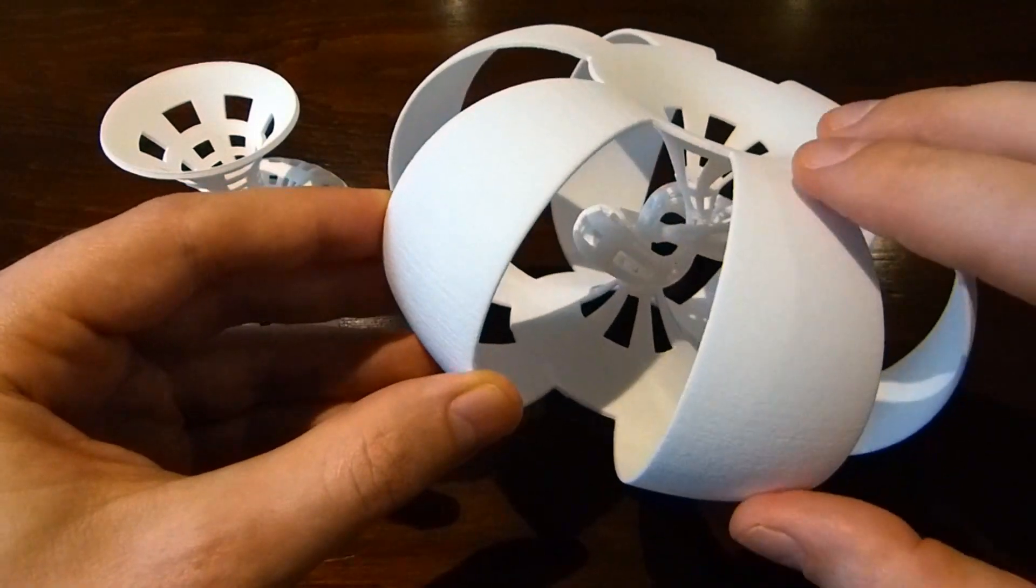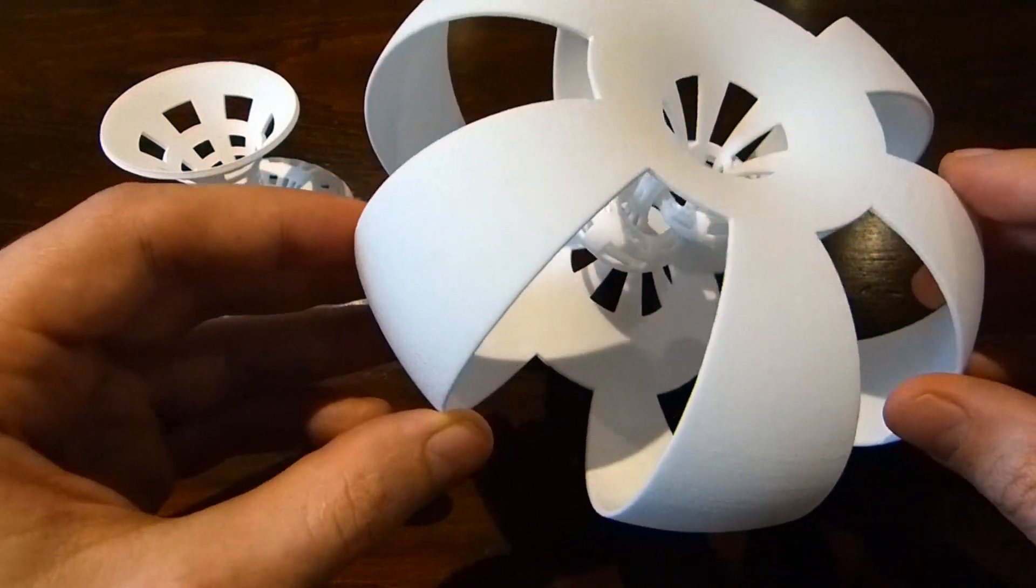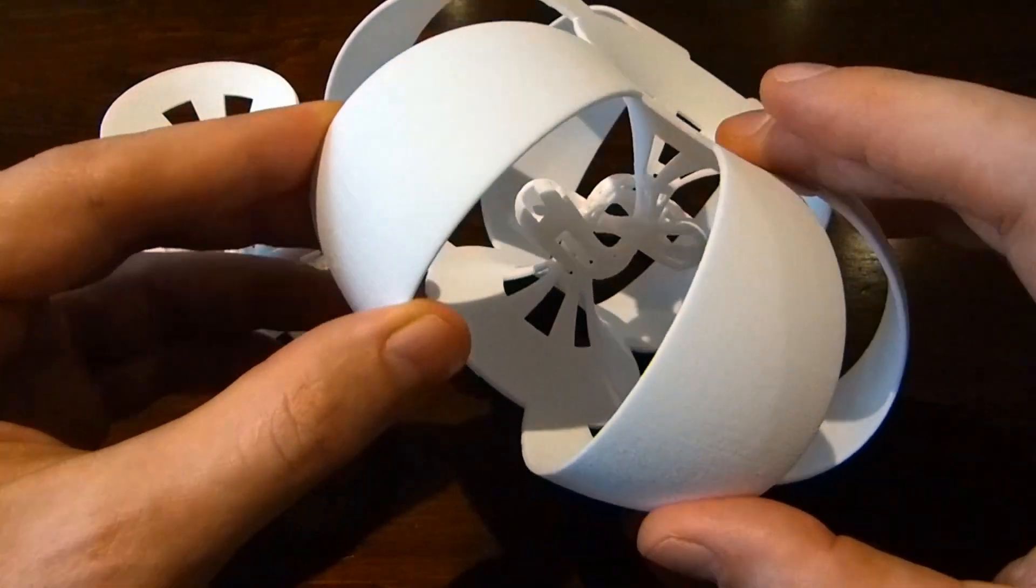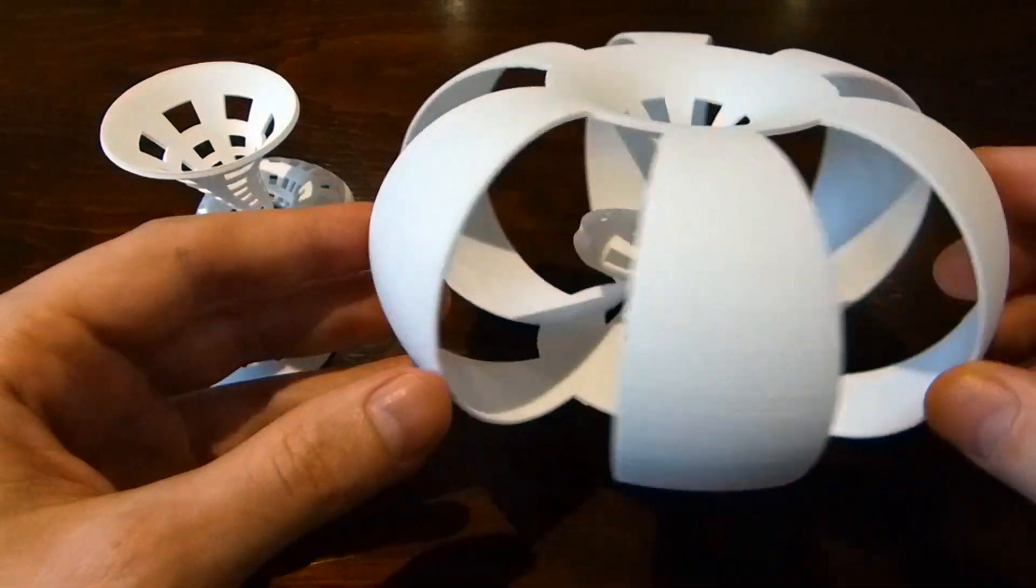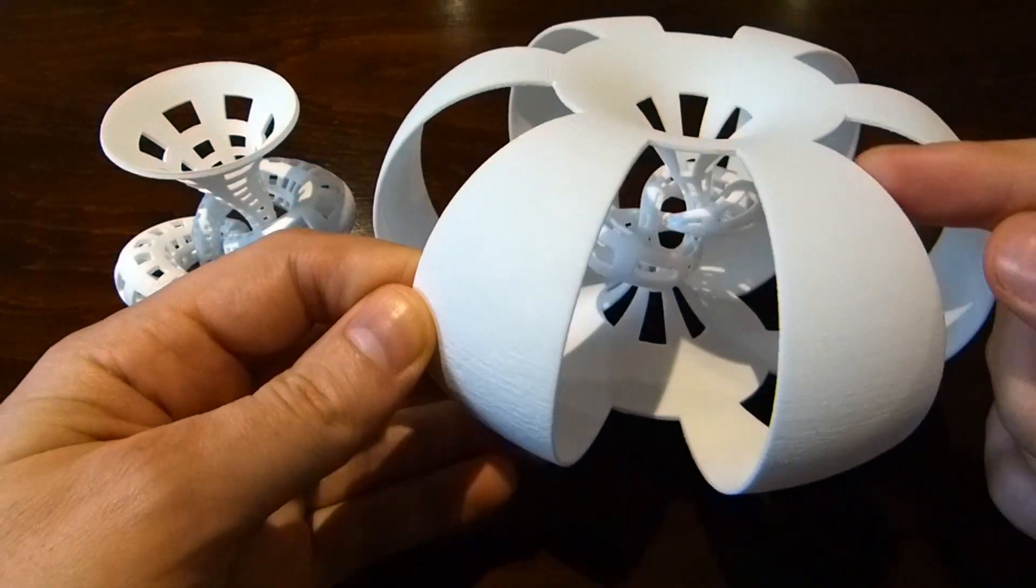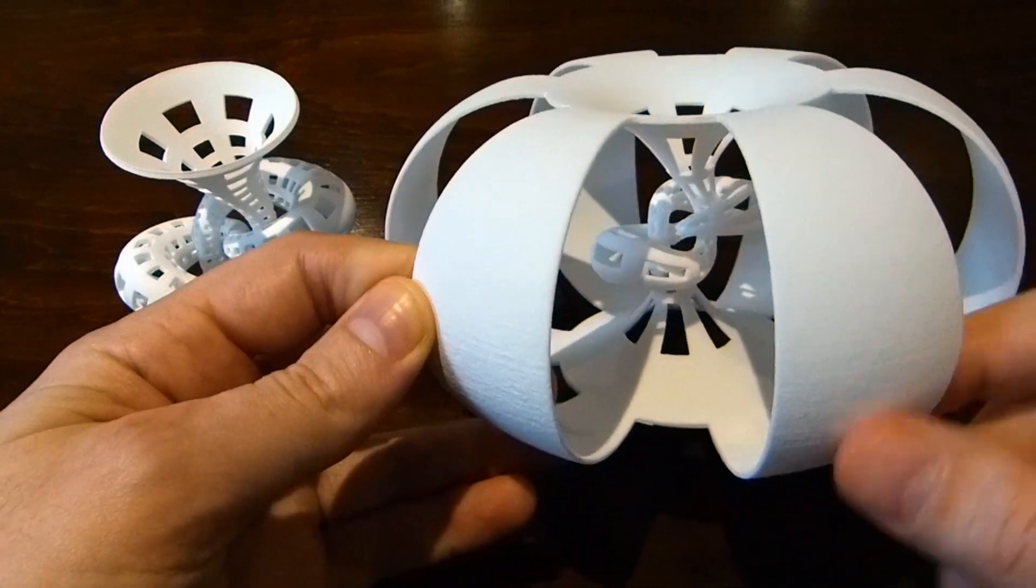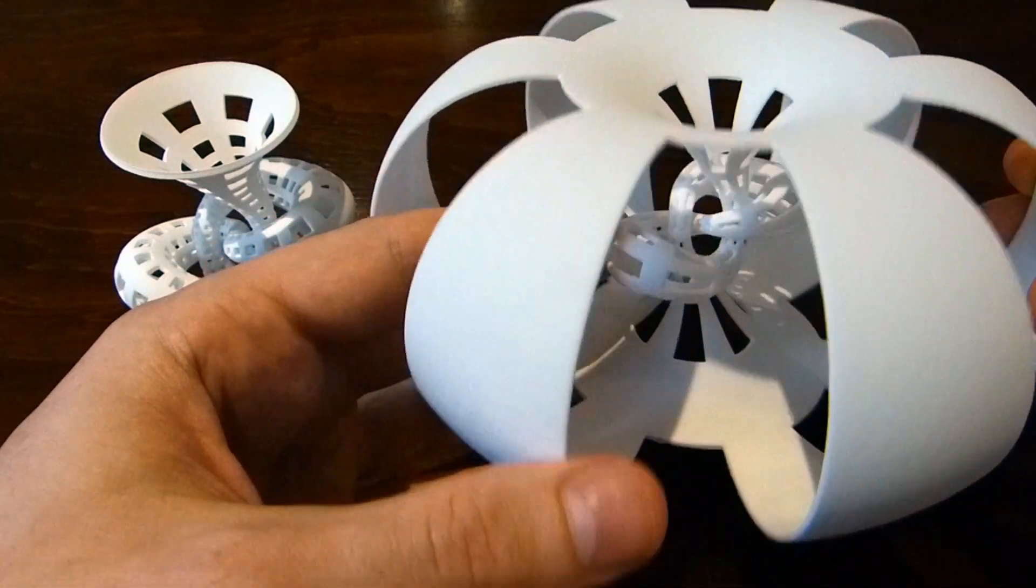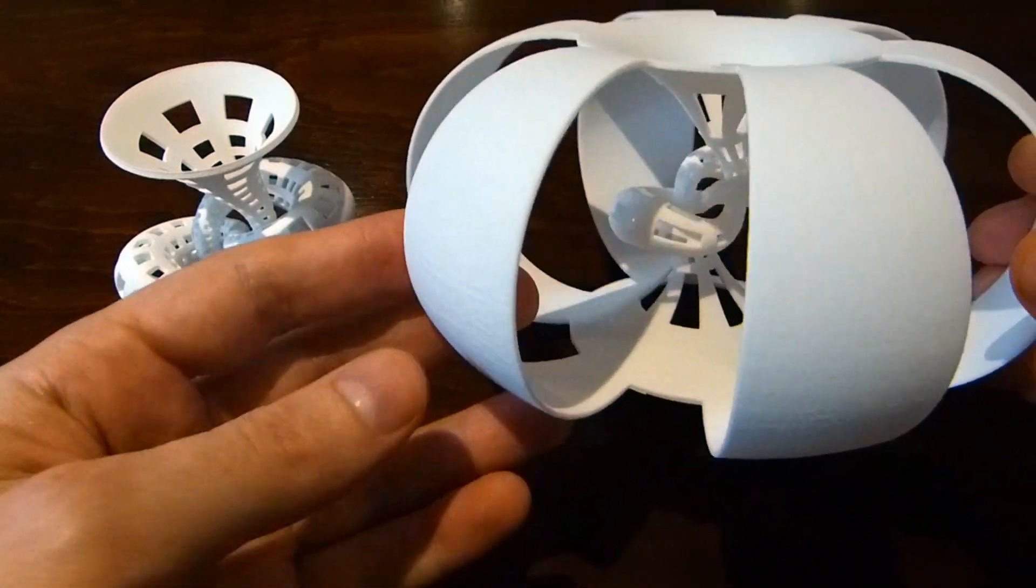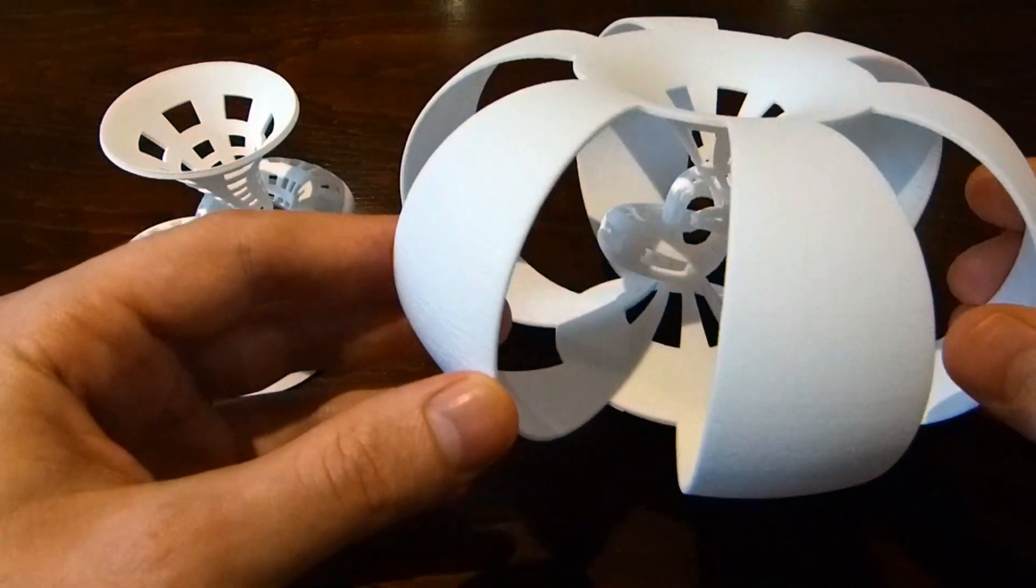And although this shows the idea of the knot complement very well—you've got a ball and you've drilled the knot out from the ball—it does have these big areas where there's nothing really going on. It's just flat, and it's harder to see the shape of the knot inside. It's more expensive and bigger than it needs to be.